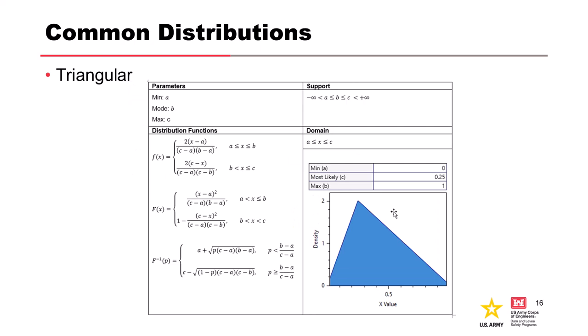The triangular distribution is used when there's a value in the middle that's more likely than others. It's a simple three-parameter distribution with a minimum, maximum, and most likely value. An important thing to remember: the most likely value is the mode, not the mean. If the distribution is asymmetrical, the mean will be different from the mode — so don't use the most likely value as a mean estimate of risk.